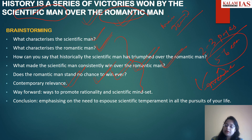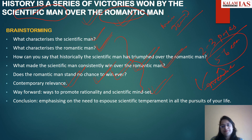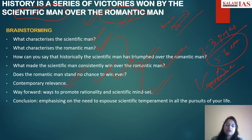Wherever it is possible — and in many essays it is possible — you should write the contemporary relevance; that will give you an edge over others. Then comes the way forward, the last part of the body, where you write about what are the ways to promote rationality and scientific mindset. Then the conclusion, which has to be balanced.